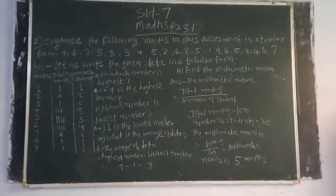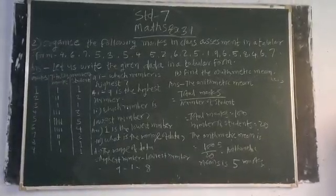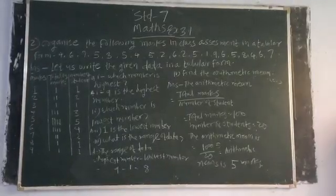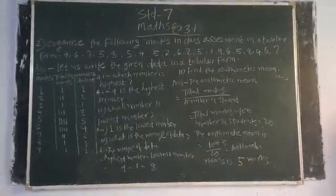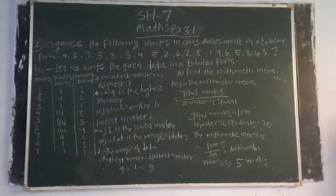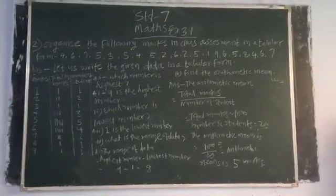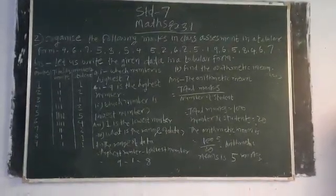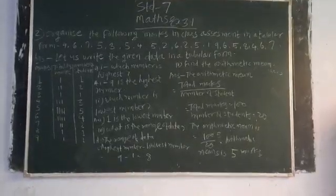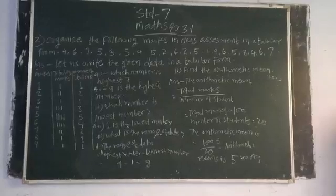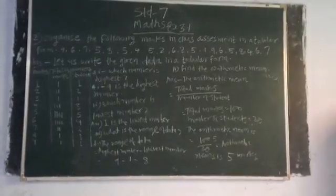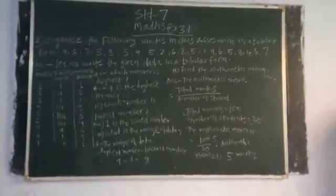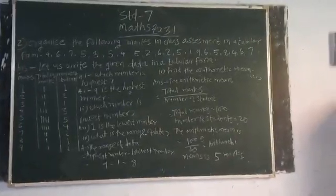The questions are: question number 1 — which number is the highest? Question number 2 — which number is the lowest? Question number 3 — what is the range of the data? And question number 4 — find the arithmetic mean. Let us write the given data in tabular form.